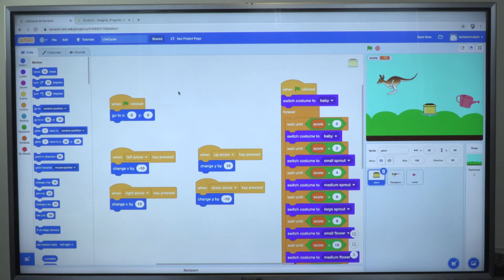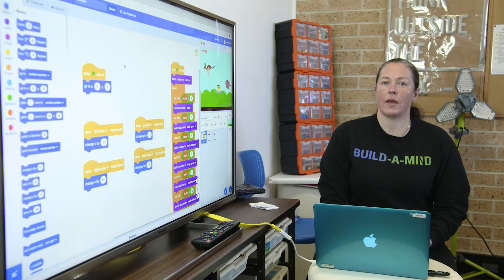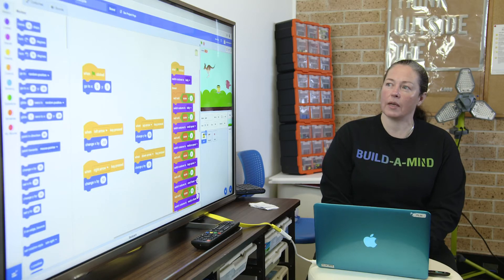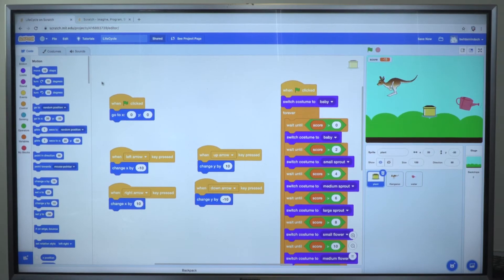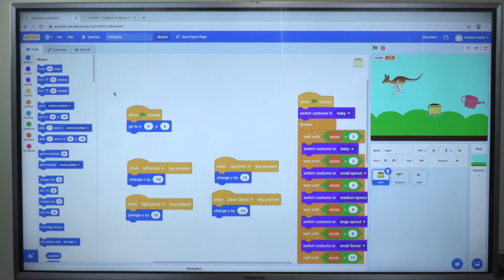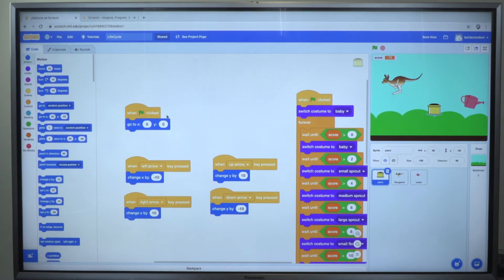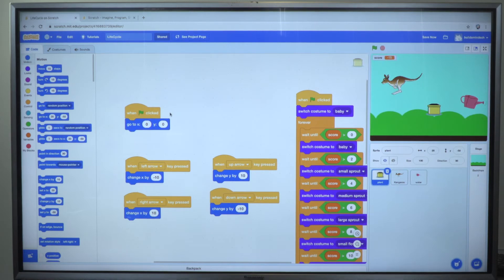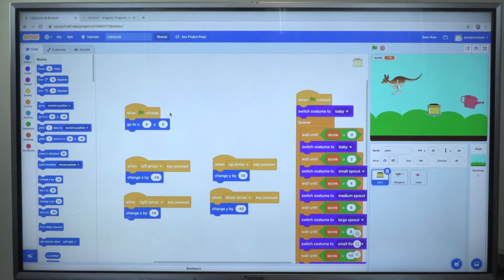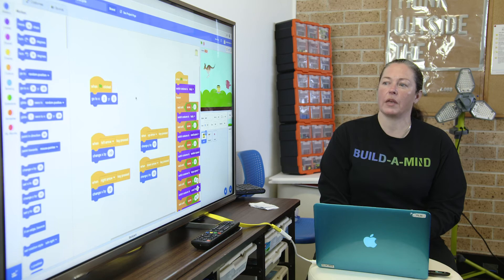When our code first starts, it has a trigger to actually start off the game, which is usually pressing on the green flag. So the starting point you can see over here is this little block where it says, when our green flag's clicked, go to XY. That just tells my plant pot where he's going to start off at the beginning of the game.